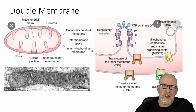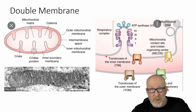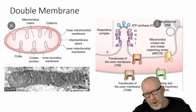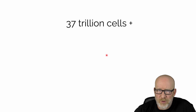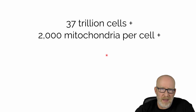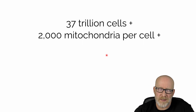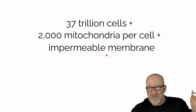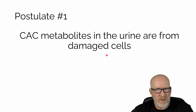Perhaps what's most important is that the mitochondria has two membranes, and this inner mitochondrial membrane is said to be relatively impermeable — which makes sense. If you are making ATP inside the mitochondria, you don't want stuff leaking out. So my first postulate is that the citric acid cycle metabolites found in urine might actually be from damaged cells, when you really think about this.